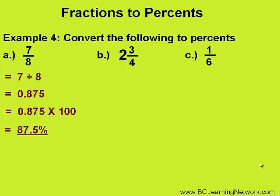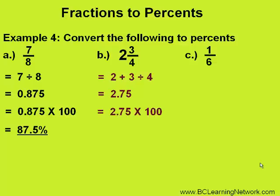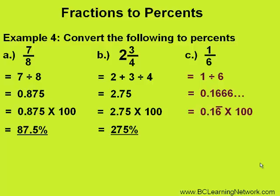Next, we'll do 2 and 3 quarters. First, we'll separate the whole number and simply divide 3 by 4, giving us an answer of 2.75. Then we'll convert 2.75 to a percent by multiplying by 100, giving us an answer of 275%. Finally, we will use 1 sixth and convert it to a percent. 1 divided by 6 gives us a repeating decimal: 0.1666 repeating. We'll multiply this by 100, which moves the decimal two places to the right, giving us a final answer of 16.6 repeating percent.